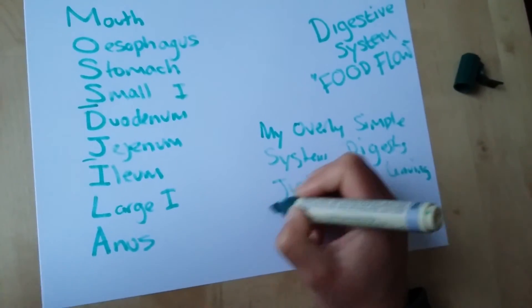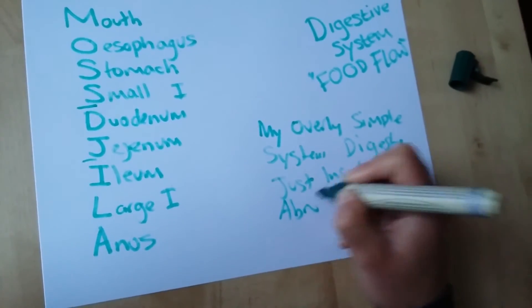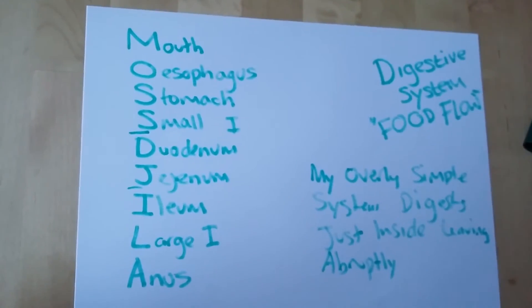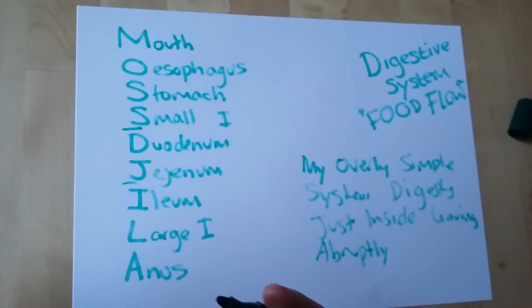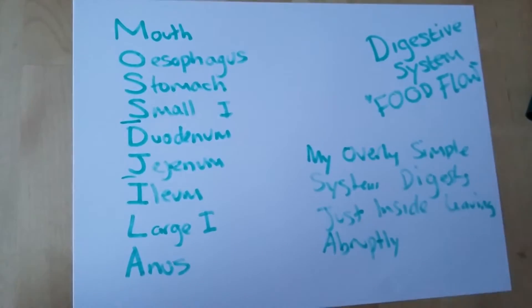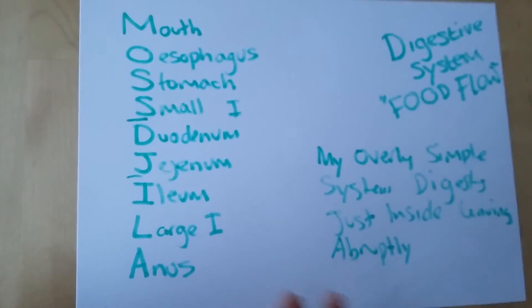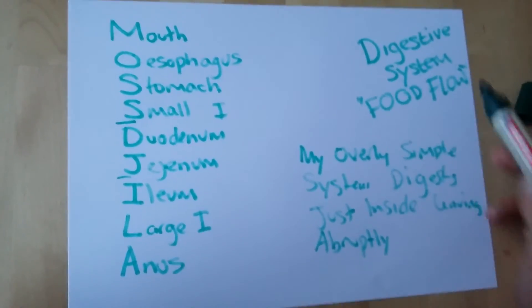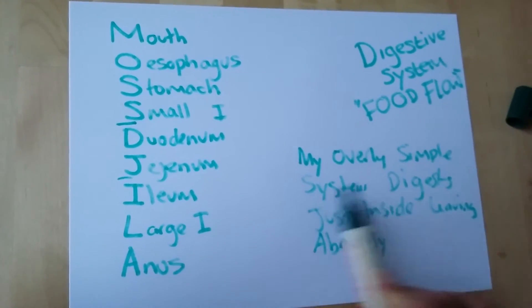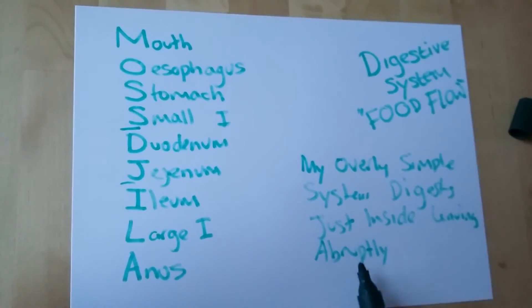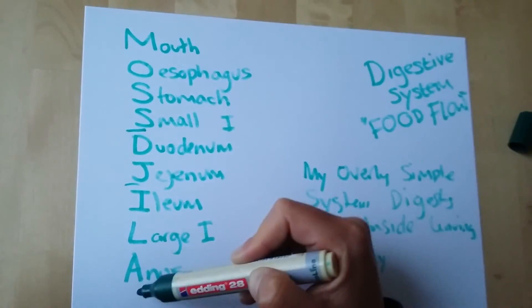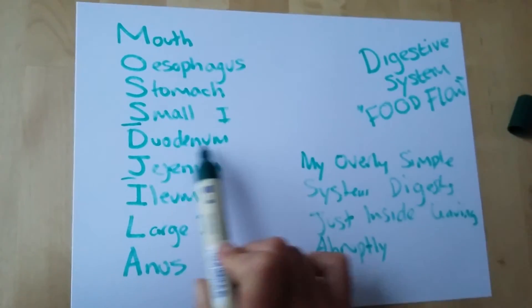This is my overly simple system to remembering your overly simple digestive system, and this is about food flow. It's not about where the enzymes get added or the integration through the liver and pancreas. It's just the food flow. So another one you can use is: My overly simple system digests just inside leaving abruptly. You write that down, that will give you your sequence.